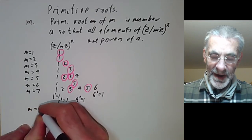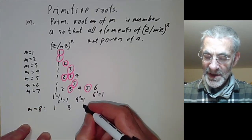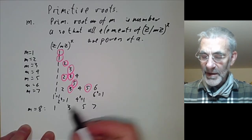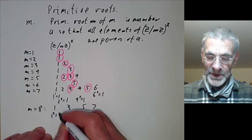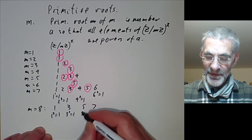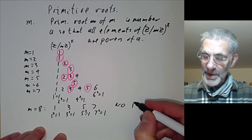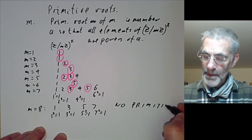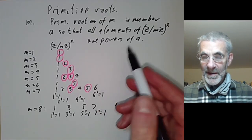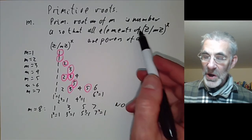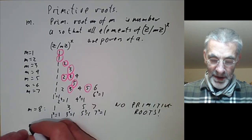What are the primitive roots for m equals 8? The elements of (Z/8Z)* are 1, 3, 5, and 7. We see that 1 squared, 3 squared, 5 squared, and 7 squared all equal 1, so there are no primitive roots. There may be no primitive roots at all for a given number — this happens for 8.